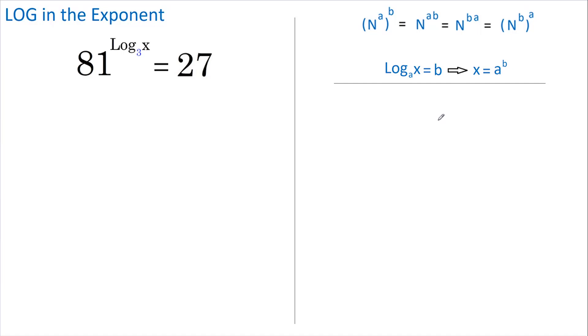Hi, welcome back. Today's video should be quite straightforward if you're aware of these two rules. The first thing to notice is that 81 and 27 are both on our three power table.